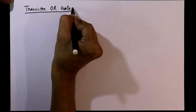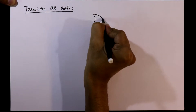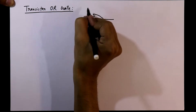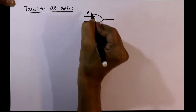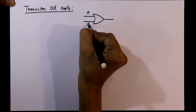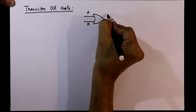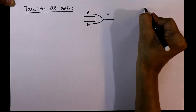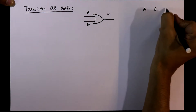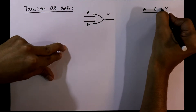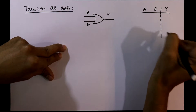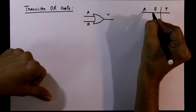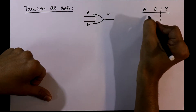Transistor OR gate. The symbol of OR gate is like this and it has two inputs A and B, and Y is the output. The truth table is here: A and B are the inputs and Y is the output, and it has four conditions.